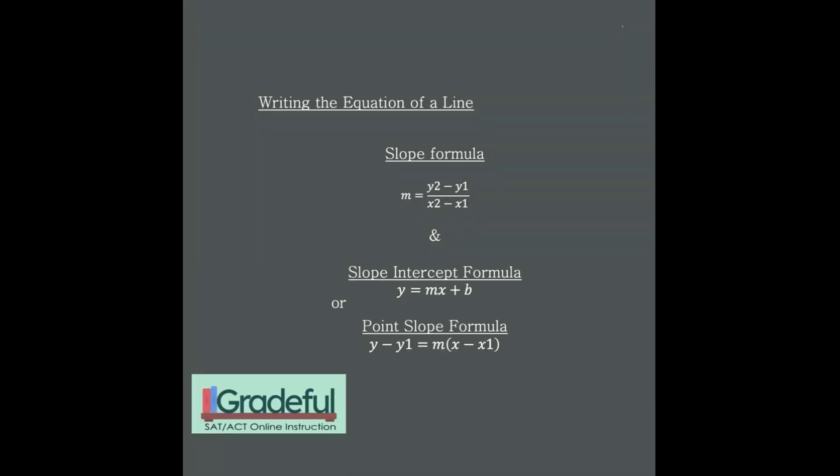Generally, you're going to always want to find the slope first, y2 minus y1 over x2 minus x1. And if you're given a slope and a y-intercept, then you'll use the slope-intercept formula. But if you're given a point and a slope, then you'll use the point-slope formula.